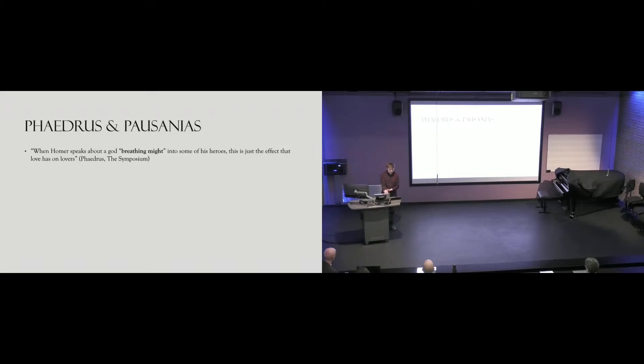Our first speaker, Phaedrus, suggests that love is a god. He says that when Homer speaks about a god breathing might into some of his heroes, this is just the effect that love has on lovers. Plato suggests we are the playthings of the gods - we fall prey to anger, to lust, to ideas, to all kinds of temptations that may be described as a kind of possession. Phaedrus suggests that Eros, the god of erotic love, inspires us to do virtuous things. How should we realize this as non-propositional knowledge? I would suggest that rather than just mere inspiration, the personification of love as a god or spirit opens up the possibility to relate to love, just as our relationships to other people show us how to love.